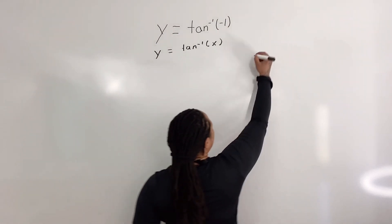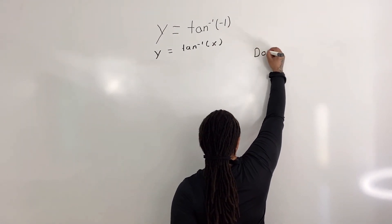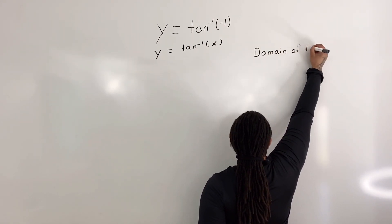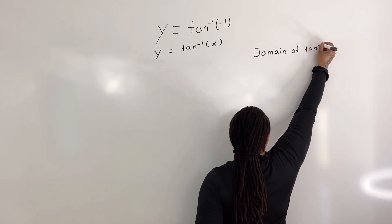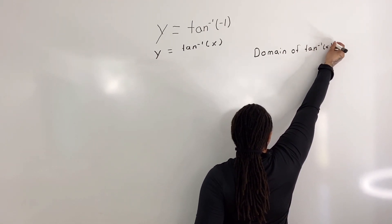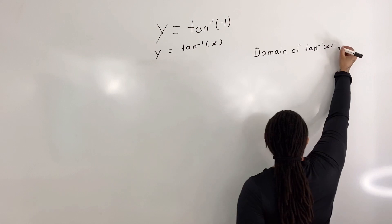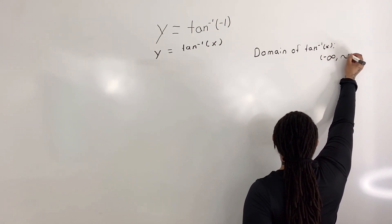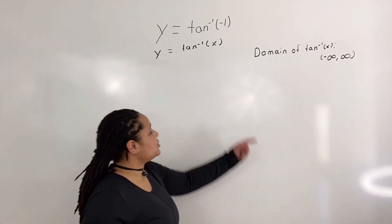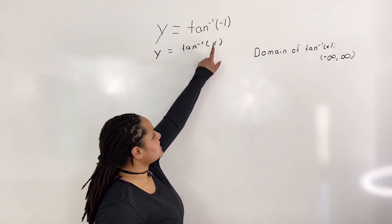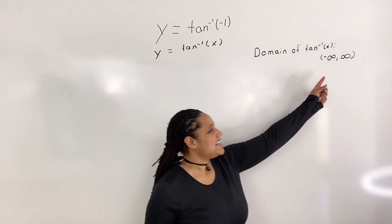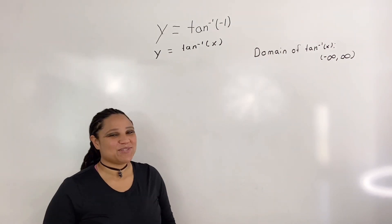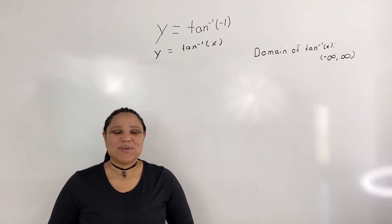The domain of tangent inverse of x is from negative infinity to positive infinity. We're going to check our input value, which is negative 1. Sure enough, negative 1 falls within negative infinity to positive infinity, so we can continue.